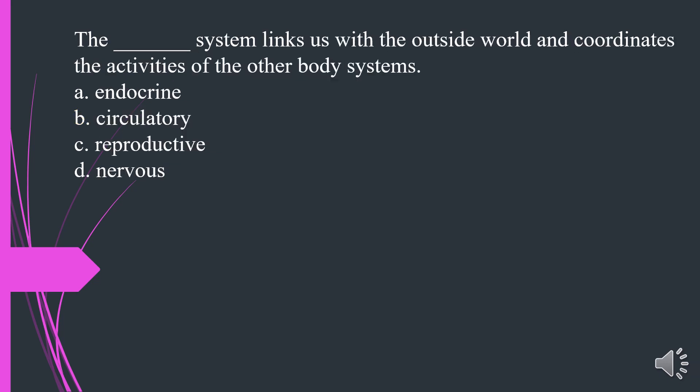What system links us with the outside world and coordinates the activities of the other body systems? A. Endocrine. B. Circulatory. C. Reproductive. D. Nervous. The answer is D. Nervous.